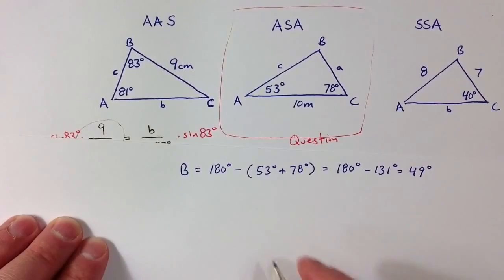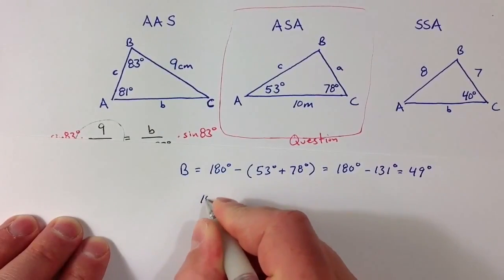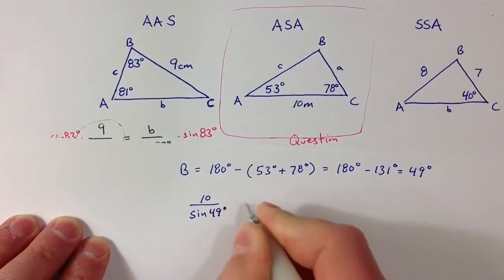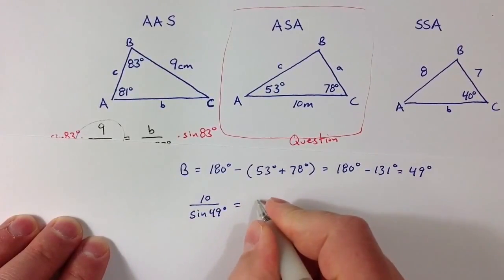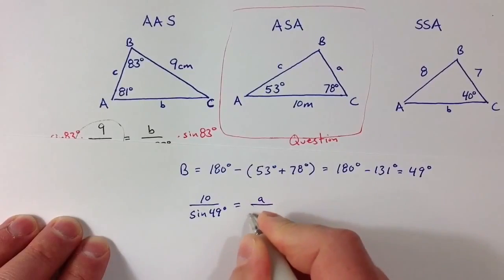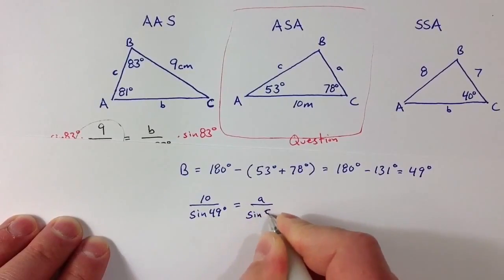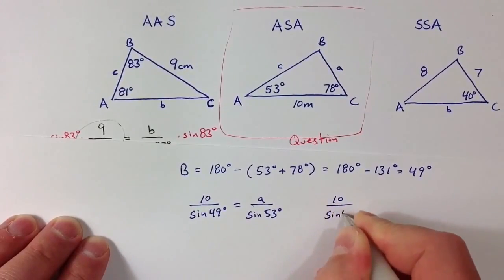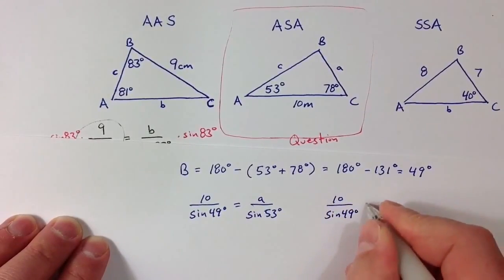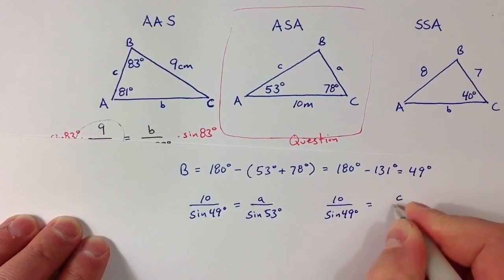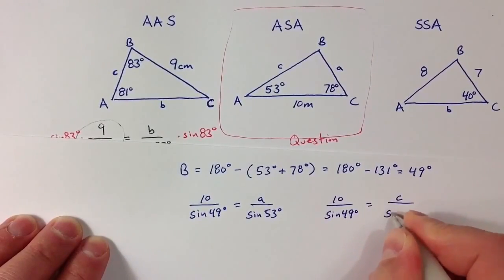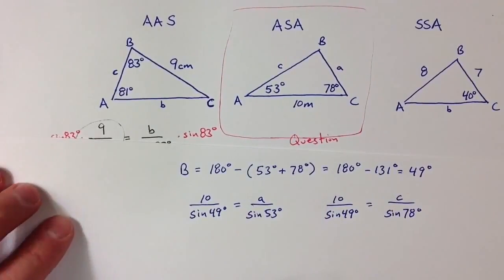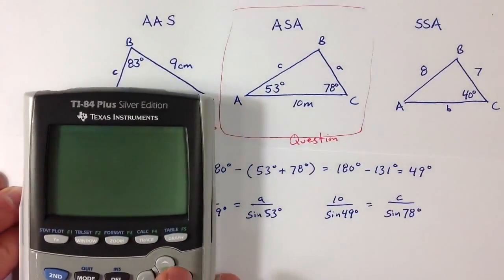Using the law of sines, I know that 10 meters divided by sine of 49 degrees has to equal A divided by sine of 53. I also know that the 10 meters divided by sine of 49 — that ratio has to be the same as side C divided by sine of 78 degrees. Then with the calculator, I can figure out what the values should be.